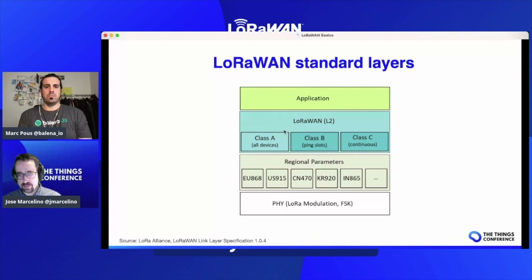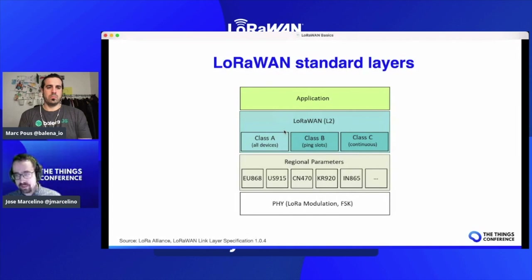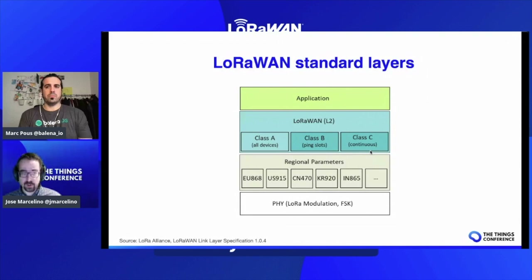Then we have the LoRaWAN second level, which is starting to be the standard definition of LoRa. The standard says you can have three classes of devices. Class A is generally what you use — devices which send to the LoRa side, to the cloud, and then wait for a reply, so they're not always on. Then Class B, which are smarter nodes able to know when the network will be sending data to them. And Class C, where the device is always listening for commands from the network side.